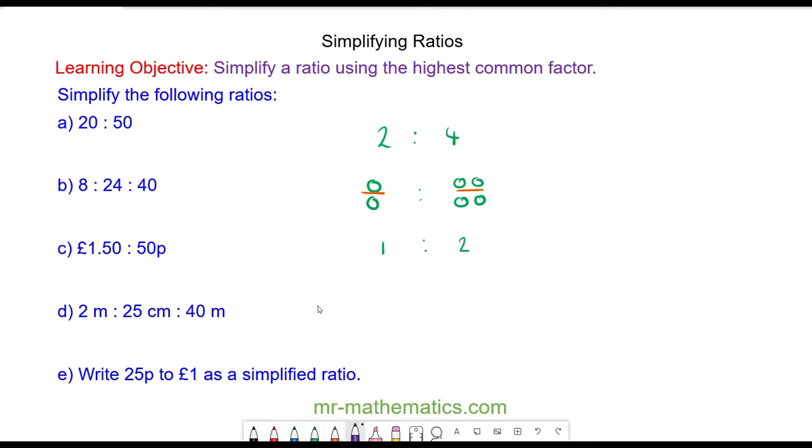We can work this out numerically as well by dividing both of the numbers, 2 and 4, by our highest common factor, which is 2. 2 divided by 2 makes 1, and 4 divided by 2 makes 2. We're going to use the same written method to work through the questions A to E.